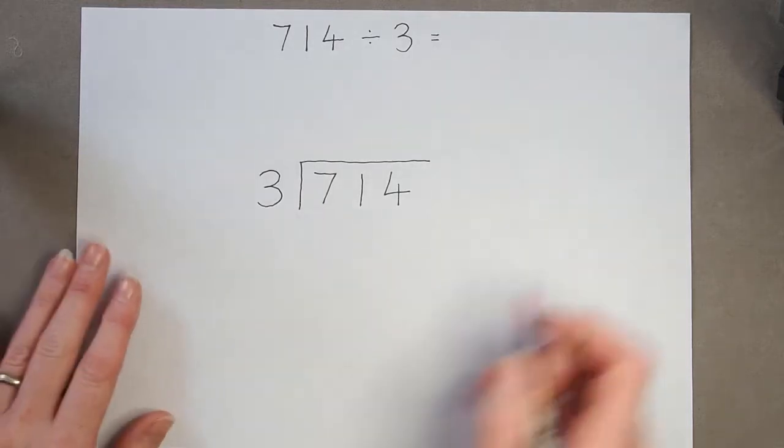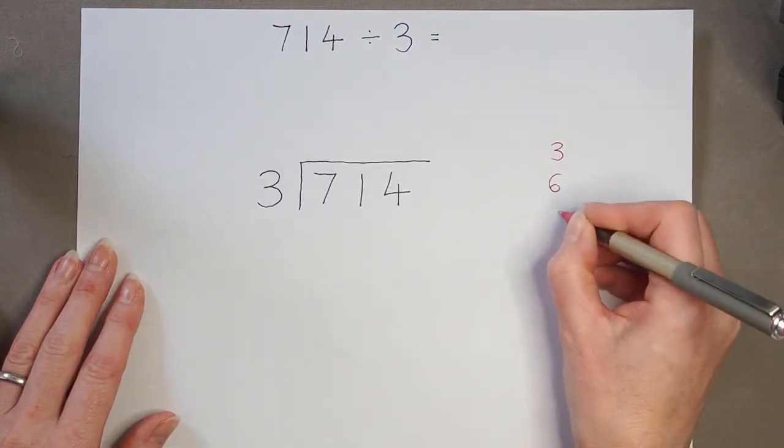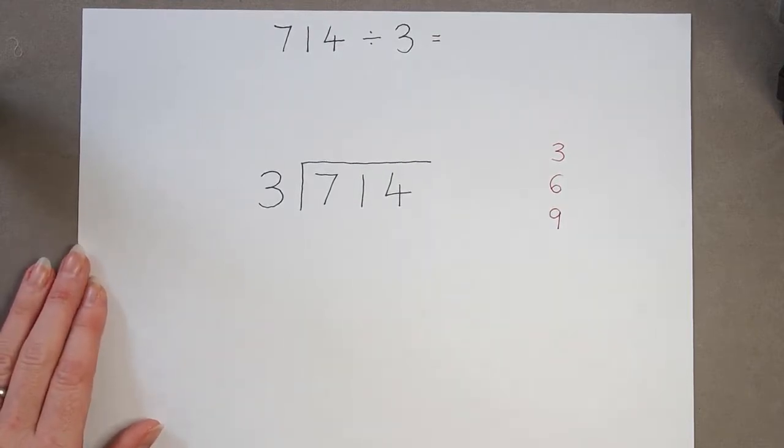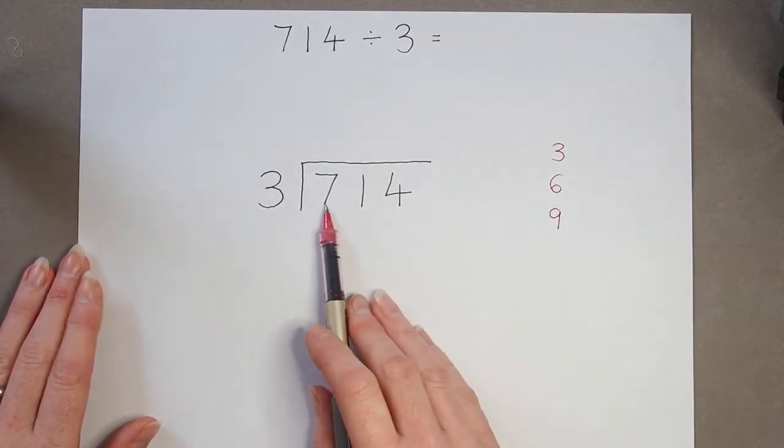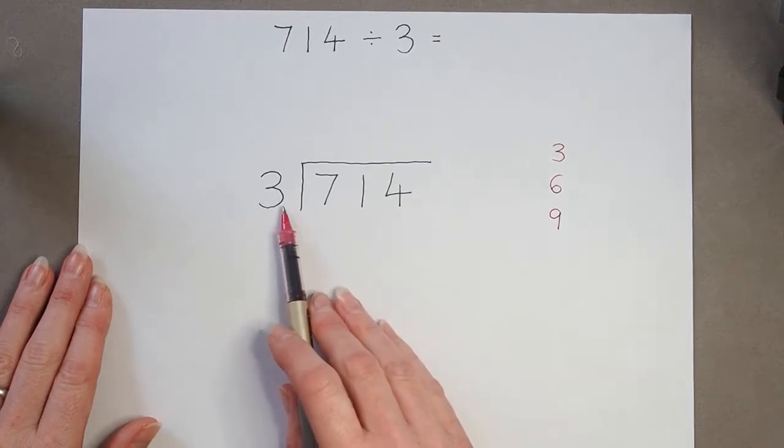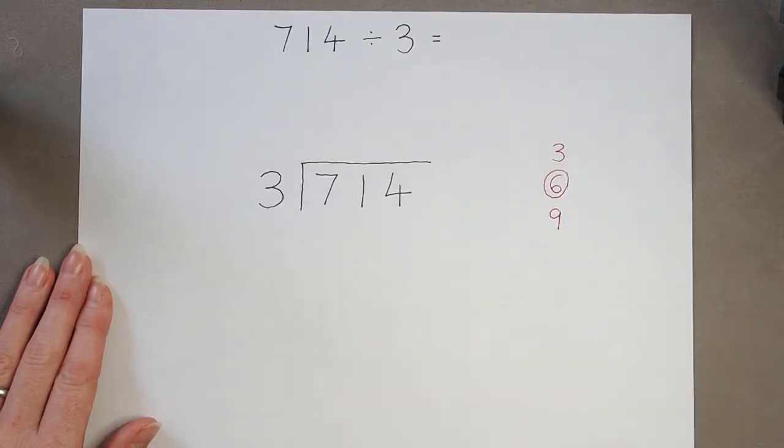By counting 3s I get 3, 6, 9. There is no 7. So if I had 7, and I'm trying to divide it into 3s, the closest I could get is 6. That's 2 lots of 3.